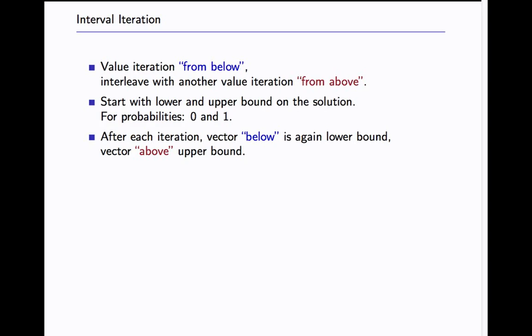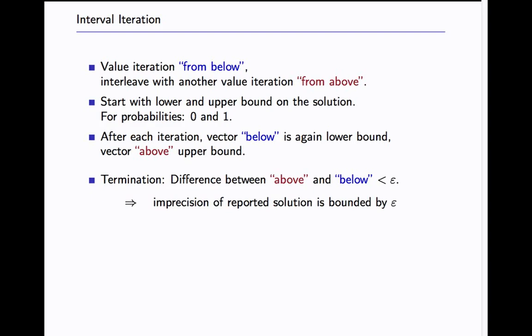You start with lower and upper bounds. For probabilities that's simple, you have a lower bound of 0 and an upper bound of 1. After each iteration the vector below is again lower bound and the vector above is still an upper bound. So now we can get some precision during the termination check. Because we can just compare between above and below. And if this is sufficiently precise we are happy and we get a solution that is sufficiently precise.